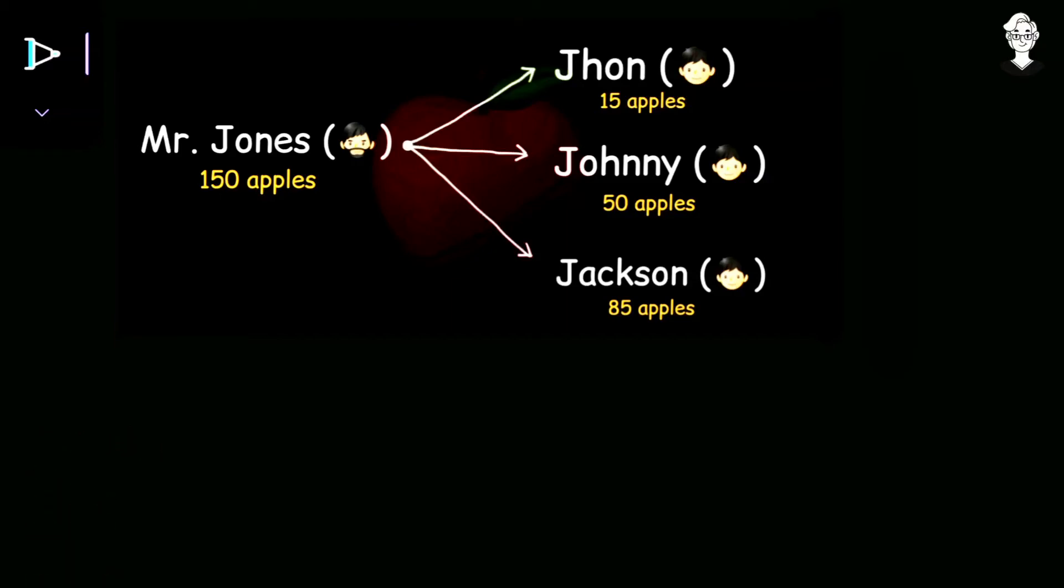So today we have an interesting math puzzle. The puzzle says that Mr. Jones, who is a farmer, has 150 apples. He gave these apples among his three sons John, Johnny and Jackson. He gave 15 apples to John, 50 apples to Johnny and 85 apples to Jackson, and told them when you return from the market in the evening, all of you must have the same amount of money.